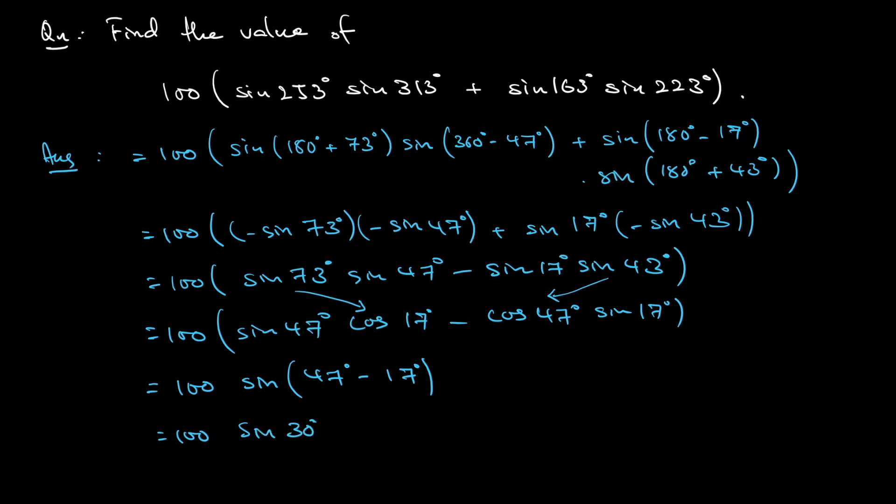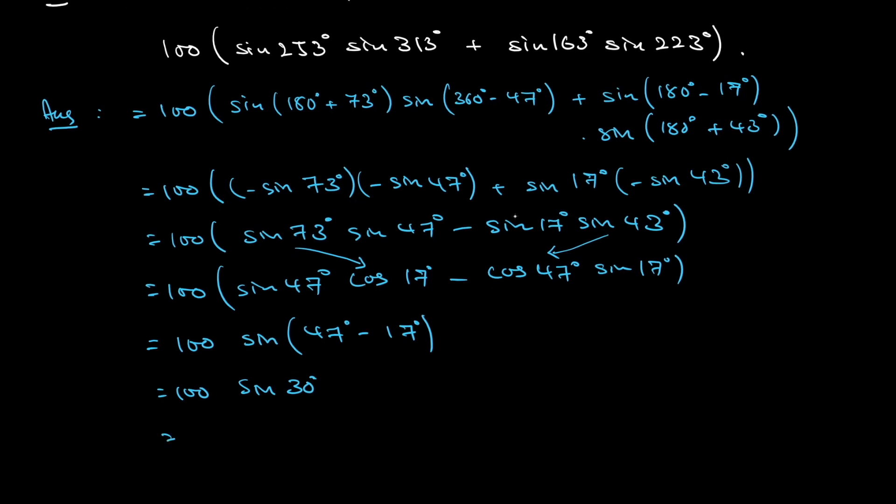Sine 30 degrees is one-half multiplied by 100, so the answer is simply 50.